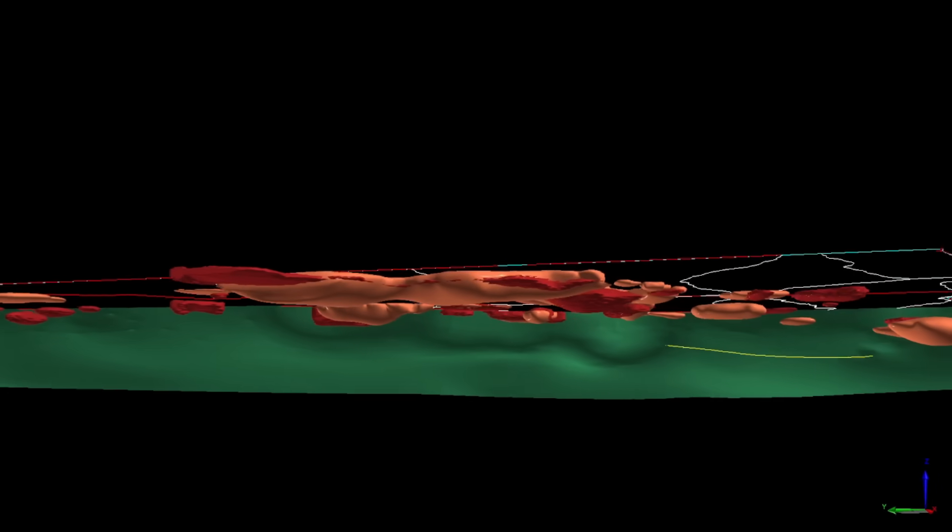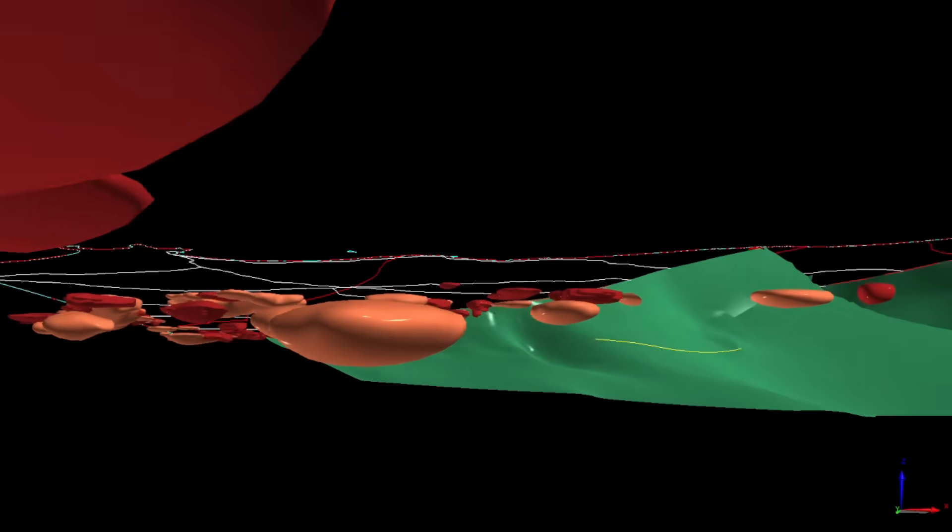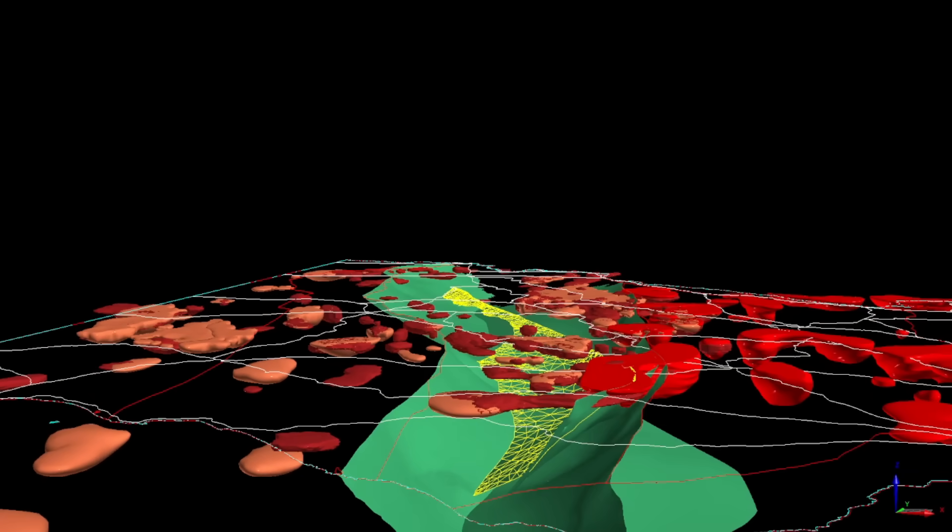This is a textbook case of tectonic inheritance, where ancient structures influenced the pathways of later geological events.